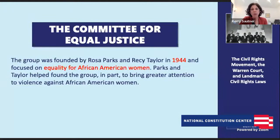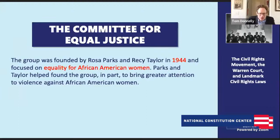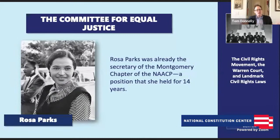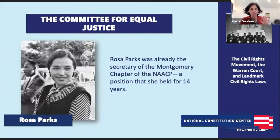The next group is the Committee for Equal Justice, founded in 1944 by Rosa Parks and Recy Taylor. It was meant to focus on African-American women. Rosa Parks is most famous for refusing to give up her seat on the bus, but she was also an active member of the civil rights movement for years — a secretary of the Montgomery chapter of the NAACP for 14 years. Recy Taylor was raised in the Jim Crow South in Alabama, and both joined together in this committee to draw attention to violence against African-American women.